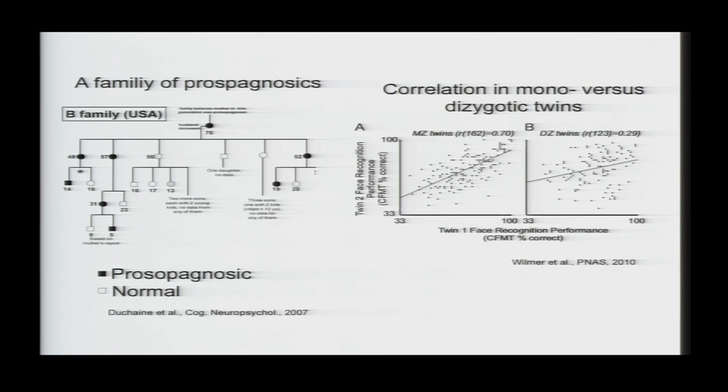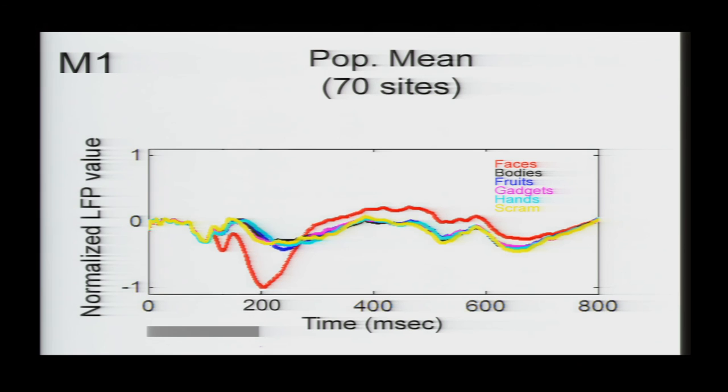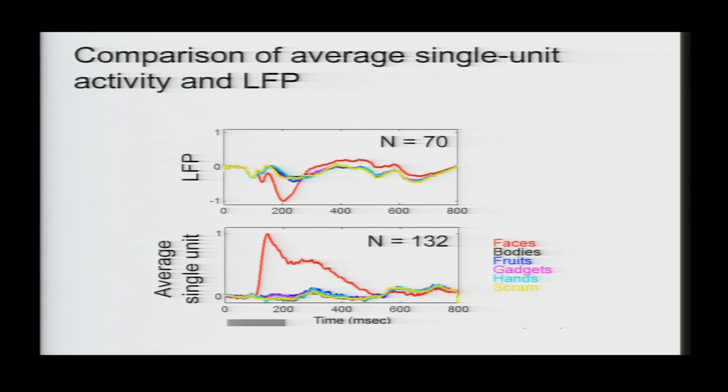And finally, looking to the future, you know, what is the information flow between patches? So here is the local field potential response in the middle face patch to faces and to other objects. And you can see two troughs at 130 milliseconds and 200 milliseconds. And if you compare the time course of the LFP to the time course of the spiking activity, you can see that the first wave correlates with a rise in activity, and the second wave correlates with a decrease in activity. And since we know that feedforward projections are excitatory, whereas feedback and local processing can contain a mixture of excitation and inhibition, it's possible that this first wave corresponds to the feedforward input, and the second wave corresponds to feedback and local processing.